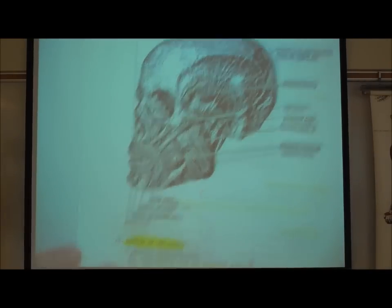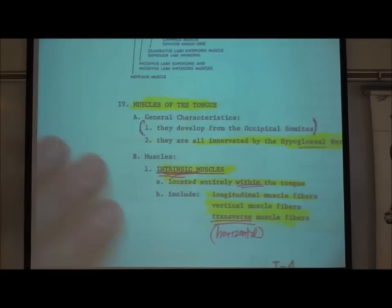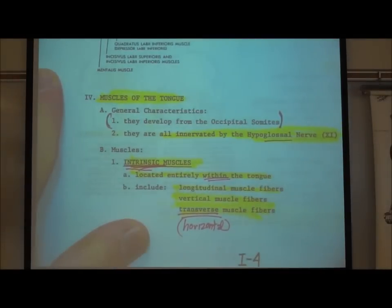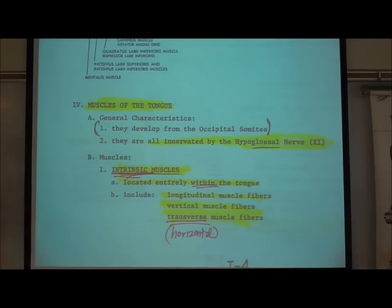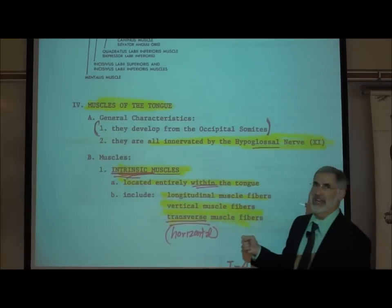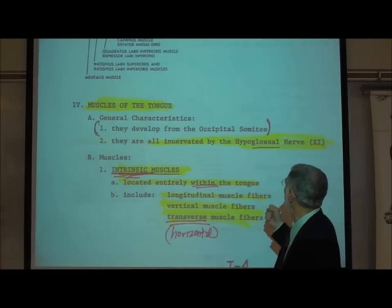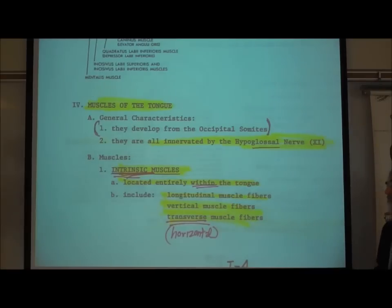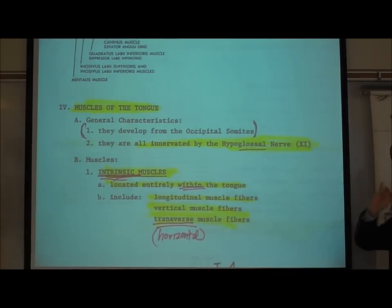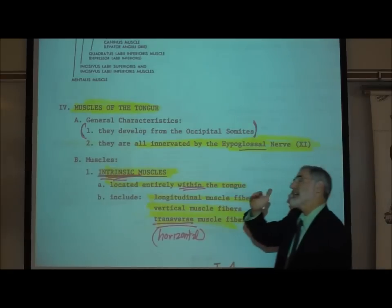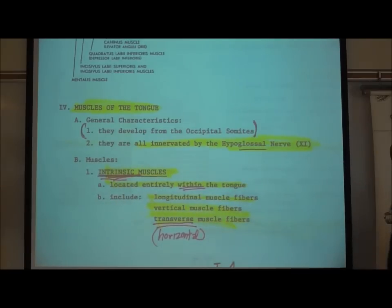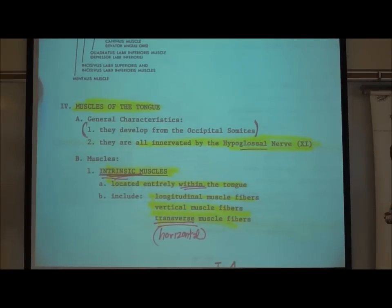Let's speak briefly about muscles of the tongue. I'm not going to test you on the embryology part. All of the tongue muscles are controlled or innervated by what's called the hypoglossal nerve. The root glossal means tongue, and hypo means under — it runs right along the underside of the tongue and controls the tongue muscles.